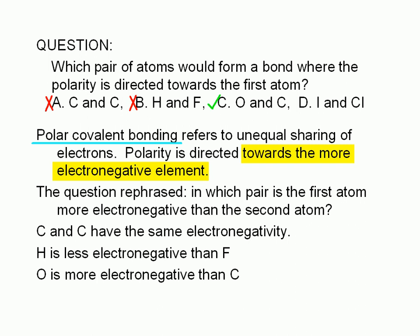Choice C is correct. Oxygen is more electronegative than carbon. Both elements are in the second period of the periodic table. Oxygen is further to the right and the trend in electronegativity from left to right is increasing.